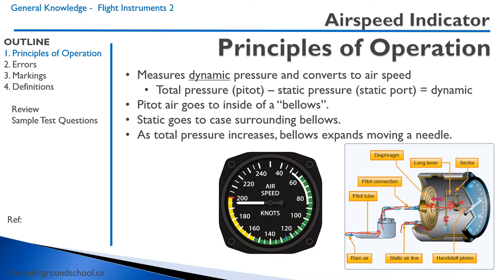On the other hand, let's say we're in a descent at a constant true airspeed. The air pressure is going to increase in the static port as we descend, providing increased pressure inside, making the bellows smaller, therefore indicating a lower indicated airspeed.